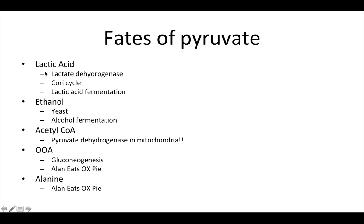Here's a summary of the fates of pyruvate. Lactic acid is made by the enzyme lactate dehydrogenase, and I've listed the Cori cycle which we'll cover later — it's mainly seen with bacteria. Ethanol is yeast, sometimes described as alcohol fermentation. Acetyl-CoA is produced by the enzyme pyruvate dehydrogenase.